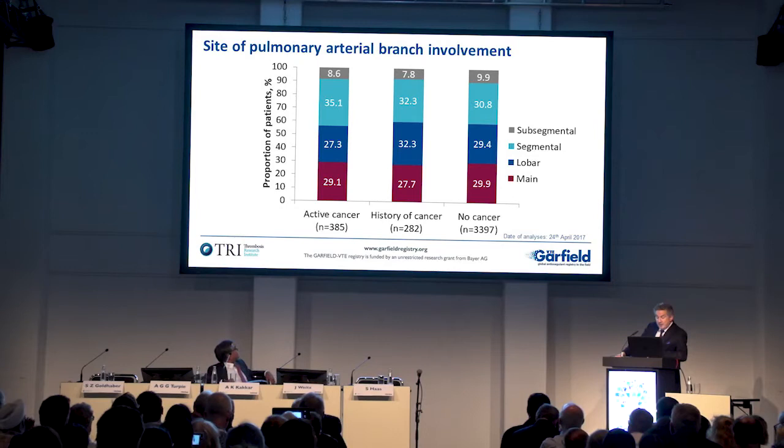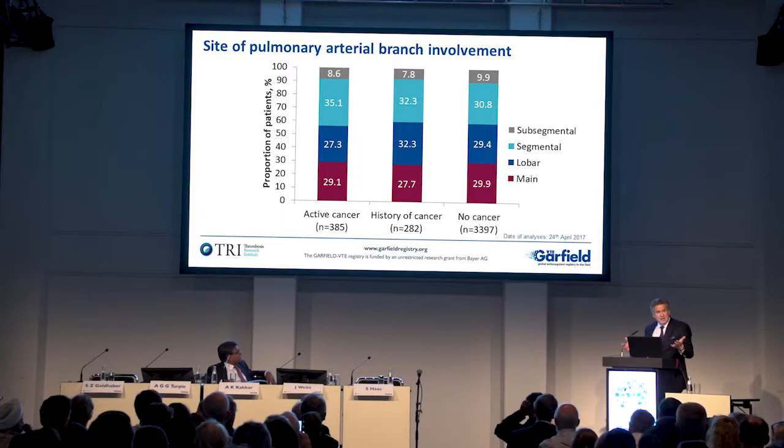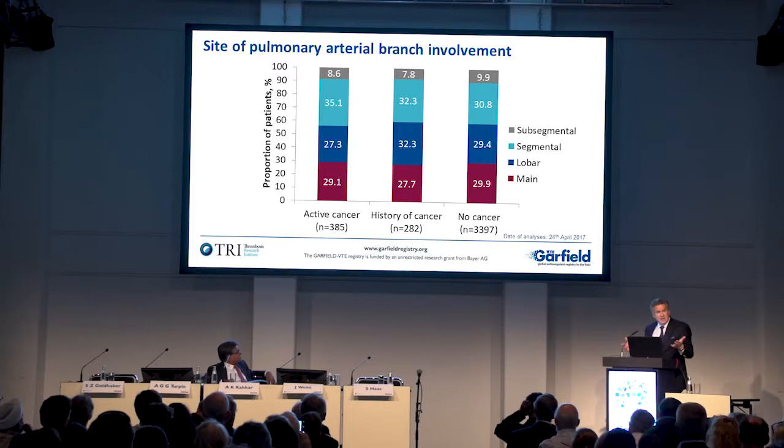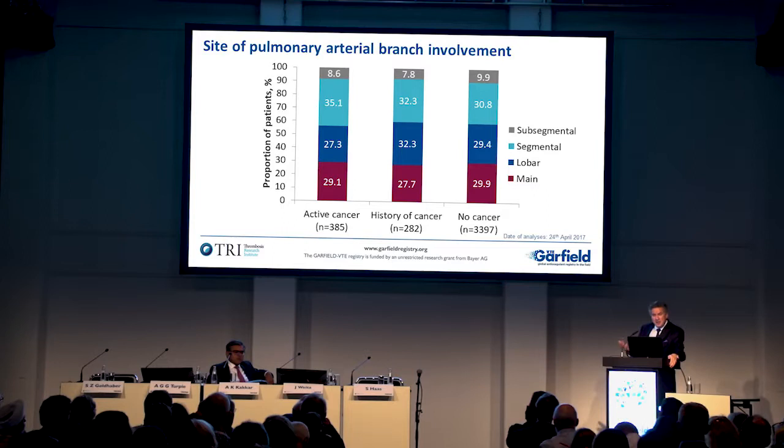What about patients with pulmonary embolism? We're always worried about our PE patients, because the case fatality rate in PE is about twice that in DVT. 90% of patients with PE — whether they had active cancer, history of cancer, or no cancer — had involvement of segmental or more proximal pulmonary arteries. So we're talking about bona fide PE. Somewhere between 8% and 10% have subsegmental PE, and this distribution is similar across all three groups.